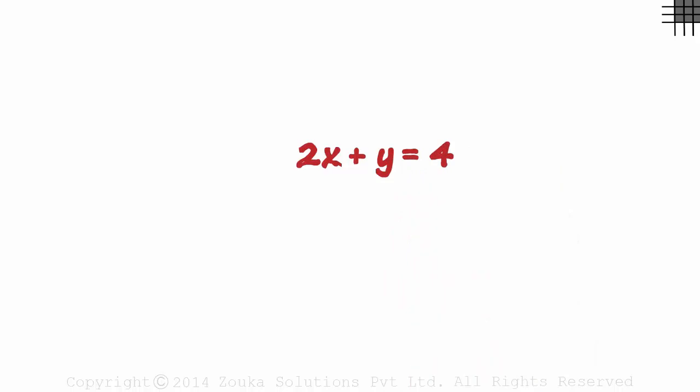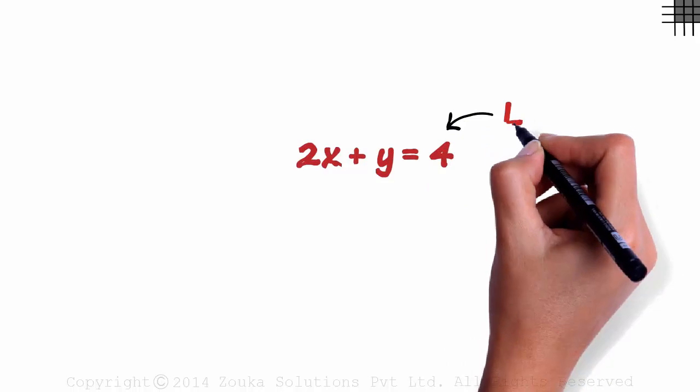2x plus y equal to 4 is a linear equation. As it is linear, its graph will be a straight line.